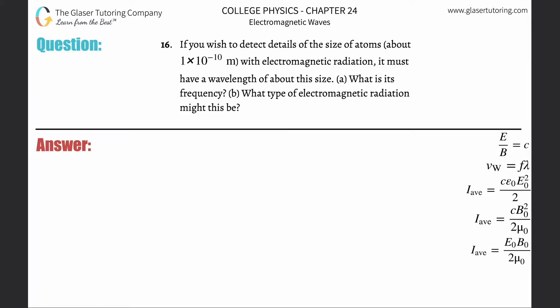Number 16: If you wish to detect details the size of atoms, about 1×10^-10 meters, with electromagnetic radiation, it must have a wavelength about this size. Letter A: What is its frequency? We've seen this now 17 times—well actually almost. The two problems in the beginning weren't really related, so maybe about 14 times. This is now going to be the velocity of the wave equals the frequency multiplied by the wavelength.